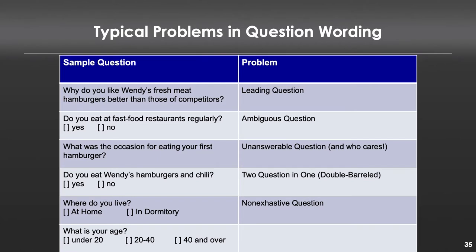'What is your age? Under 20? 20 to 40? 40 and over?' This has a non-mutually exclusive set of answers — what do I do if I'm 40 years old? Do I check the middle option or the last option? The interpretation will be wildly different depending on which I choose. Easy fix: just ensure there's no overlap — 'Under 20? 20 to 40? 41 and over?'